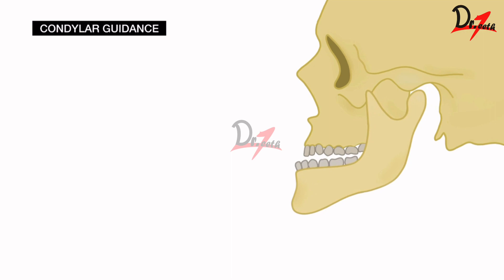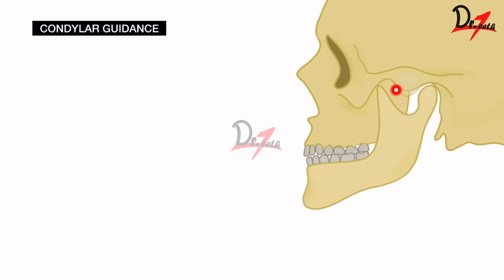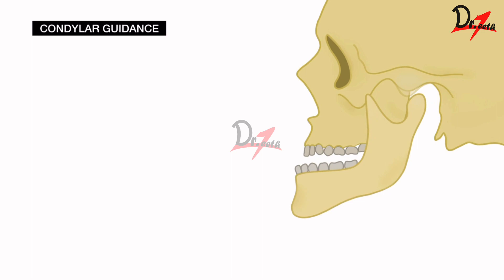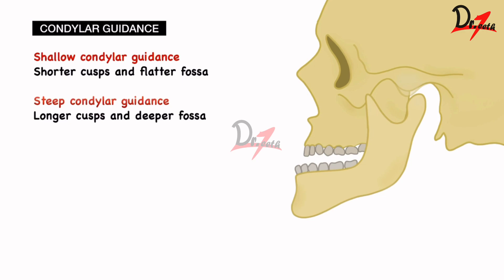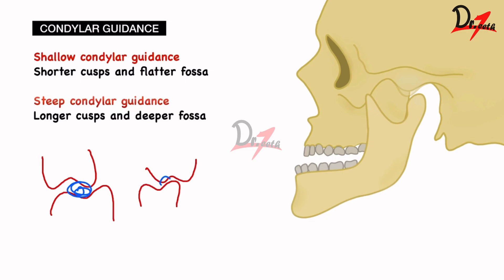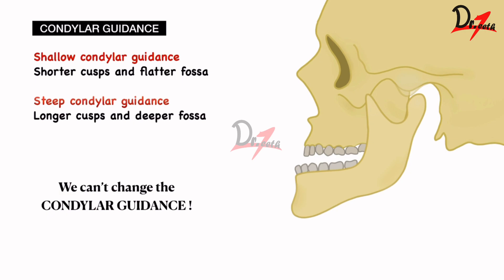The mandible moves along the condylar guidance because it is a bony structure. With a shallow condylar guidance, there is little posterior space, so to achieve balanced occlusion we need shorter cusps — even with short cusps you can get contact. But with a steep condylar guidance, the space is greater, so we need longer cusps and deeper fossae to achieve that point contact. The condylar guidance cannot be changed because it is a bone-to-bone relationship determined by anatomy.